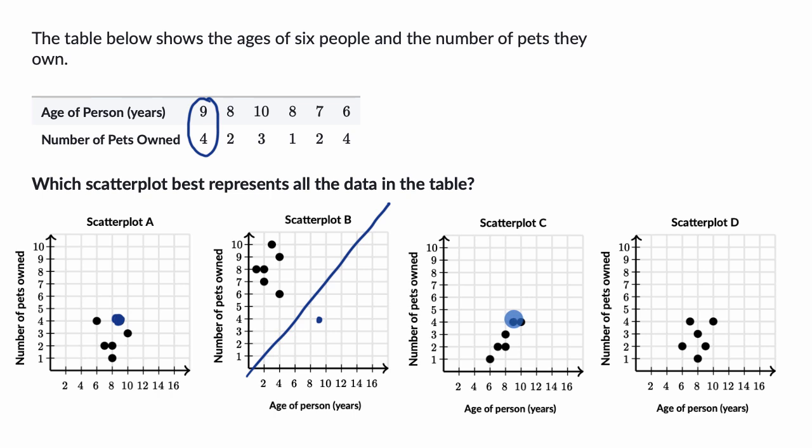Nine years old and four pets—it's on scatter plot C. So that one's still in the running. And then nine years old and four pets should be right over here. It's not in scatter plot D. So already, even with that first point, we can rule out two of them.